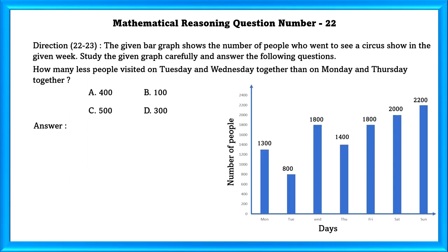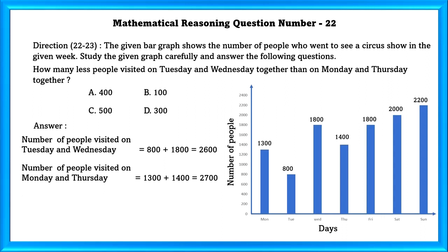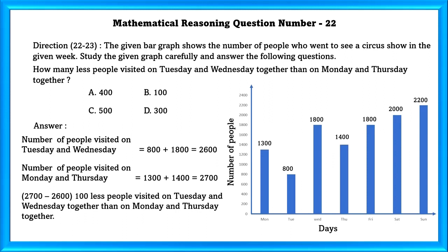Mathematical reasoning question number 22. The given bar graph shows the number of people who went to see a circus show during the week. How many fewer people visited on Tuesday and Wednesday together than on Monday and Thursday together? The number of people who visited on Tuesday and Wednesday is 2600. The number of people who visited on Monday and Thursday is 2700. So 100 fewer people visited on Tuesday and Wednesday together than on Monday and Thursday together.